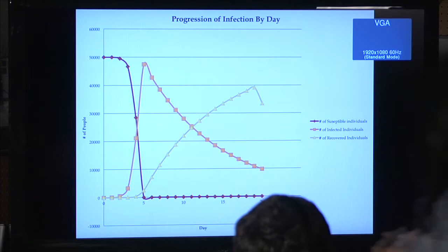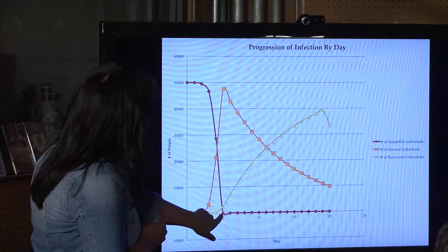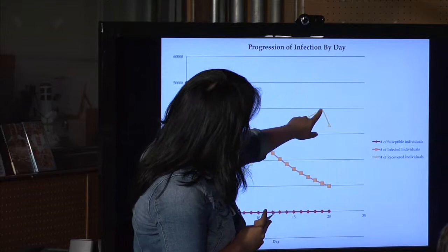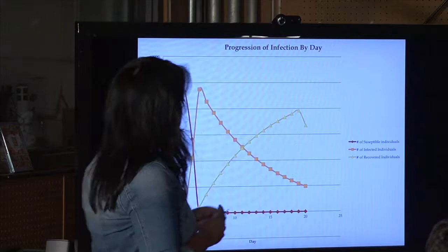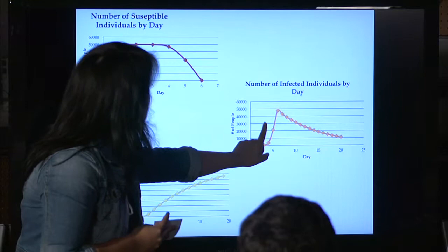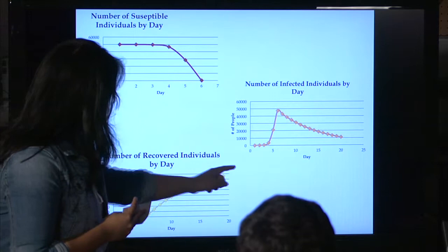Here are the graphs. By day five, infected people were at their peak and no one was susceptible. Then recovery goes to a steep slope upward. The susceptible line drops to zero, the infected count slowly declines, and the recovered count rises to reach all 50,000 students. The individual graphs show: susceptible drops to zero around day six, day six has the highest infected count, and recovery keeps increasing until it reaches the full university population. That concludes my presentation.